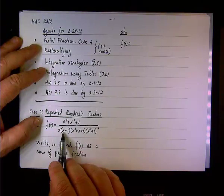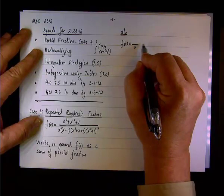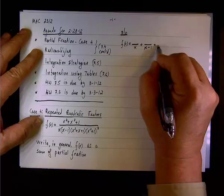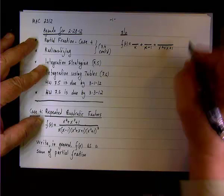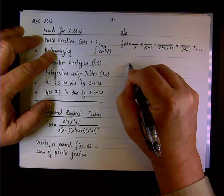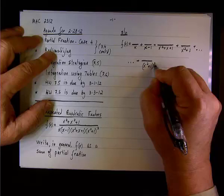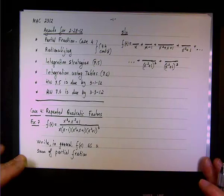Let's count how many factors we have: one, two, three, and then three more because we have (x² + 1) repeated three times — so six total. We have x, which is a linear factor; (x − 1), another linear factor; then a prime quadratic (x² + x + 1) that cannot be factored; and three repeated quadratics (x² + 1), (x² + 1)², (x² + 1)³.